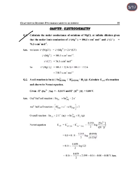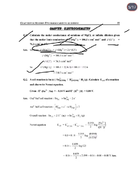Next chapter: Electrochemistry. A common numerical: Calculate the molar conductance of a solution of MgCl₂ at infinite dilution, given molar conductance of Mg²⁺ and Cl⁻. Molar conductance of MgCl₂ = λ(Mg²⁺) + 2λ(Cl⁻). Substituting the given values into this equation gives the answer.